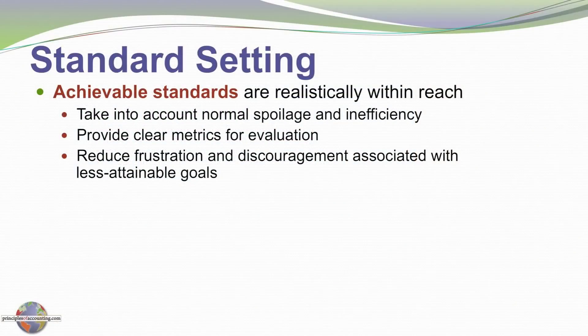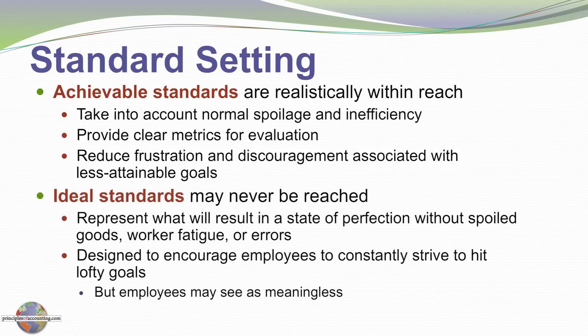There are different schools of thought about how standards should be set. One idea is that standards should be achievable. Achievable standards are realistically within reach. They take into account normal spoilage and inefficiency. They provide clear metrics for evaluation, and they might reduce frustration and discouragement associated with less attainable goals. However, some businesses may decide to opt for ideal standards that can never be reached. They represent what would result in a state of perfection.